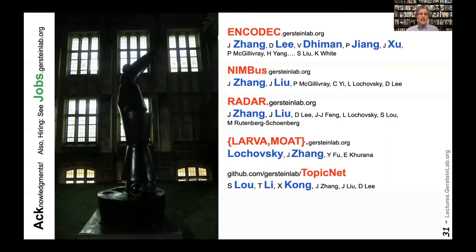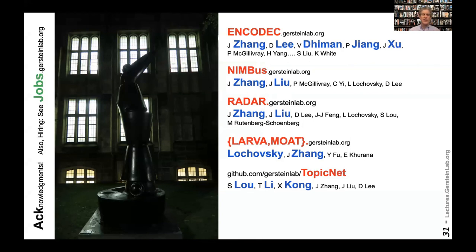Thank you for your attention. The principal scientist who led most of this work was Jing Zhang, an associate research scientist who has since moved to a faculty position at Irvine. She worked closely with graduate students Jason Liu and Donglin Li. All the developed tools are available with URLs provided. We also have openings for people interested in ENCODE-related research.